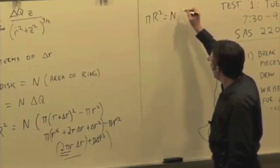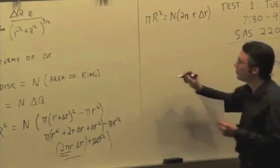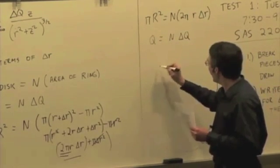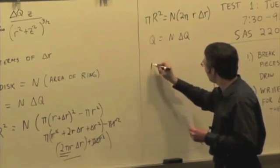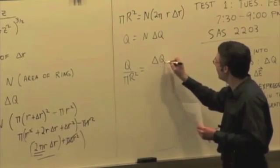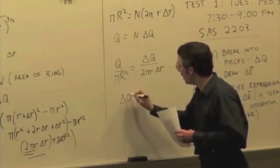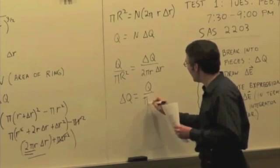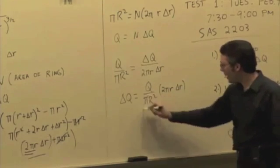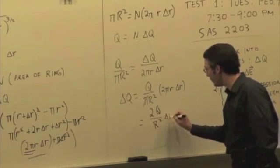So we have πR² = N × 2πr·δr, and Q = N × δQ. Dividing these gives Q over πR² = δQ over 2πr·δr. Therefore, delta Q equals Q over πR² times 2πr·δr, and simplifying: delta Q = (2Q / R²) δr.